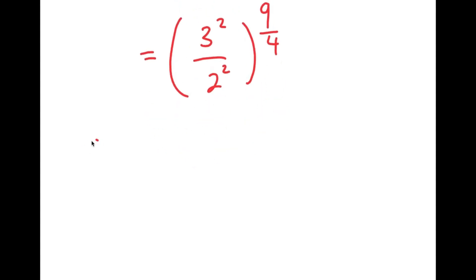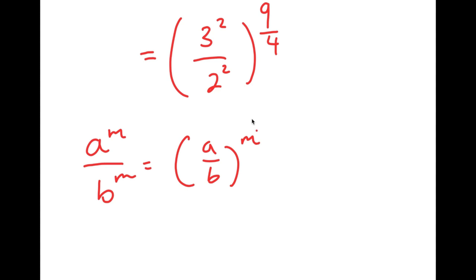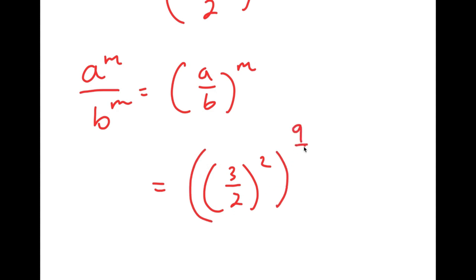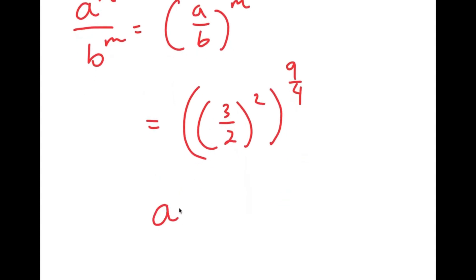If I have something in the form a to the power of m over b to the power of m, this is equal to a over b to the power of m. So 3 squared over 2 squared is going to equal 3 over 2 squared, and I still have this to the power of 9 over 4. Now, if I have something in the form a to the power of m to the power of n, this is equal to a to the power of m times n.